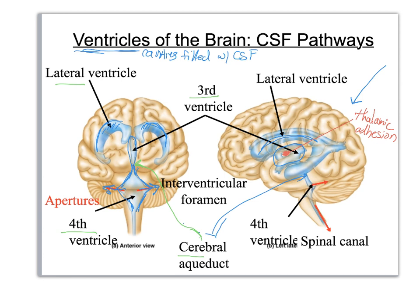The fourth ventricle is going to empty into the spinal canal that goes down the center of your spinal cord. The arrows show you the direction that the cerebrospinal fluid can flow.